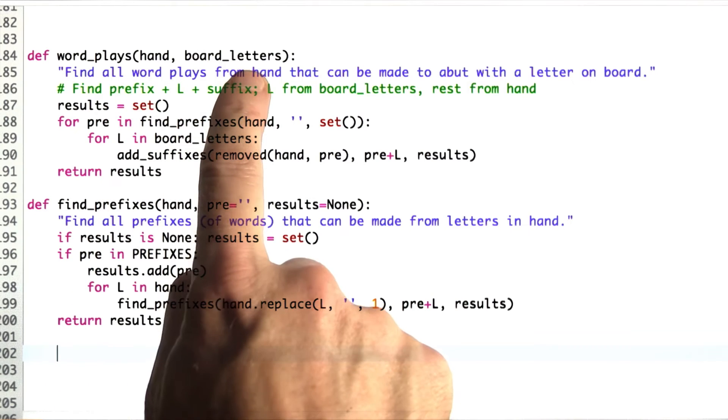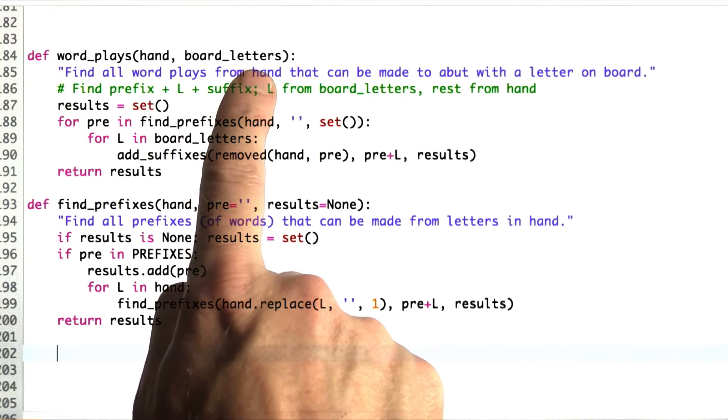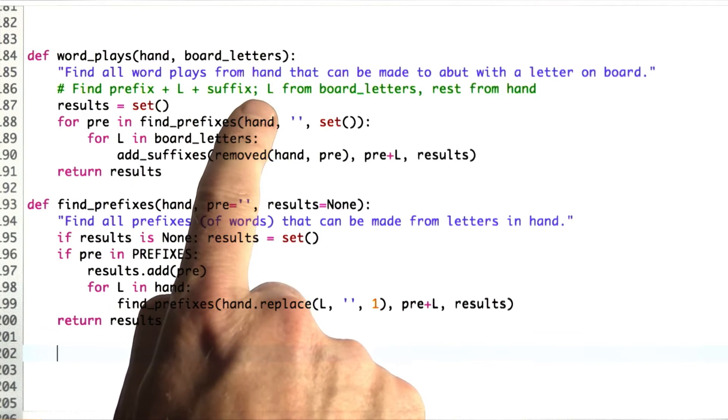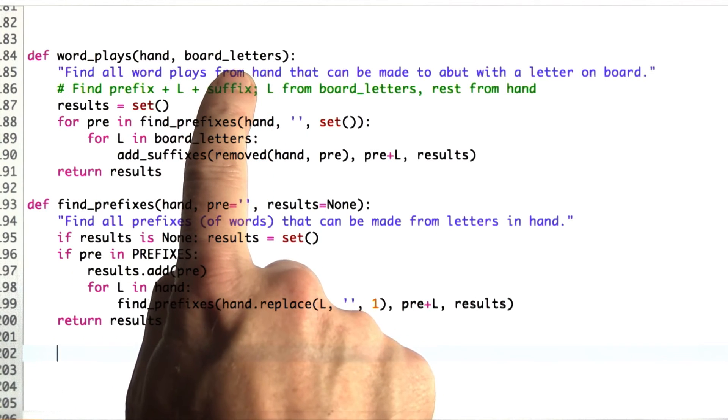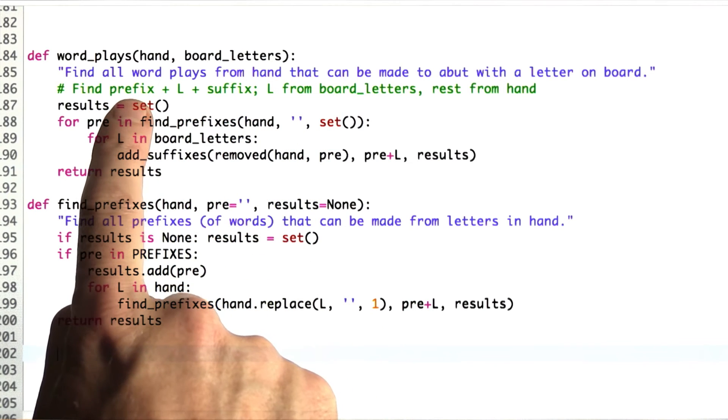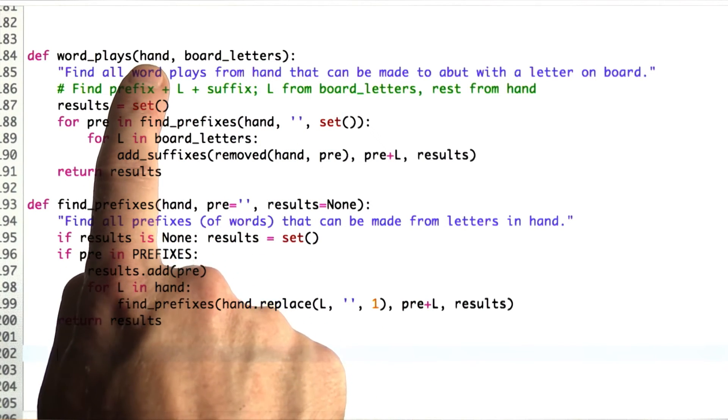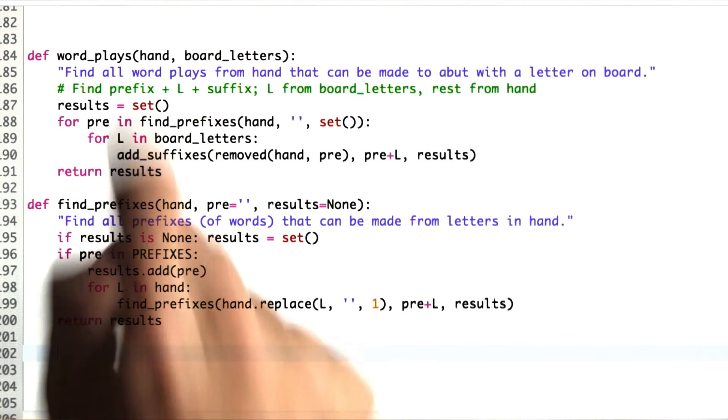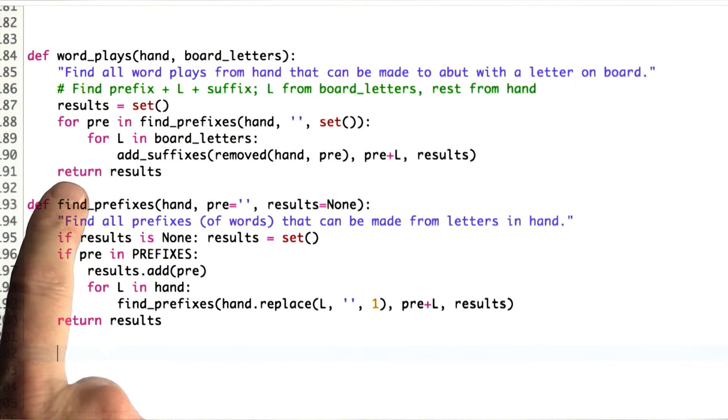Here's where it plays. It takes a hand and a set of letters that are on the board, and it's going to find all possible words that can be made from that hand connecting to exactly one of the letters on the board. We're going to break it up into a prefix that comes only from the hand, then the letter from the board, and then the remainder of the suffix that comes from the hand. The same structure as we have before.